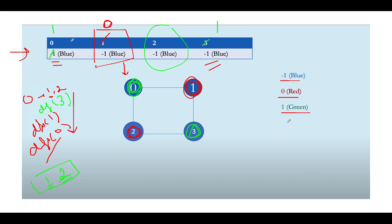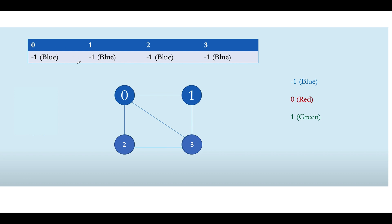Now let's look at an interesting negative case to get a better understanding of the algorithm. The graph has been updated — there is an additional connection between 0 and 3. Let's start the iteration. At node 0, the color is minus 1 (unvisited), so we color it green and perform DFS. All its neighboring nodes — 1, 2, and 3 — should be marked red.